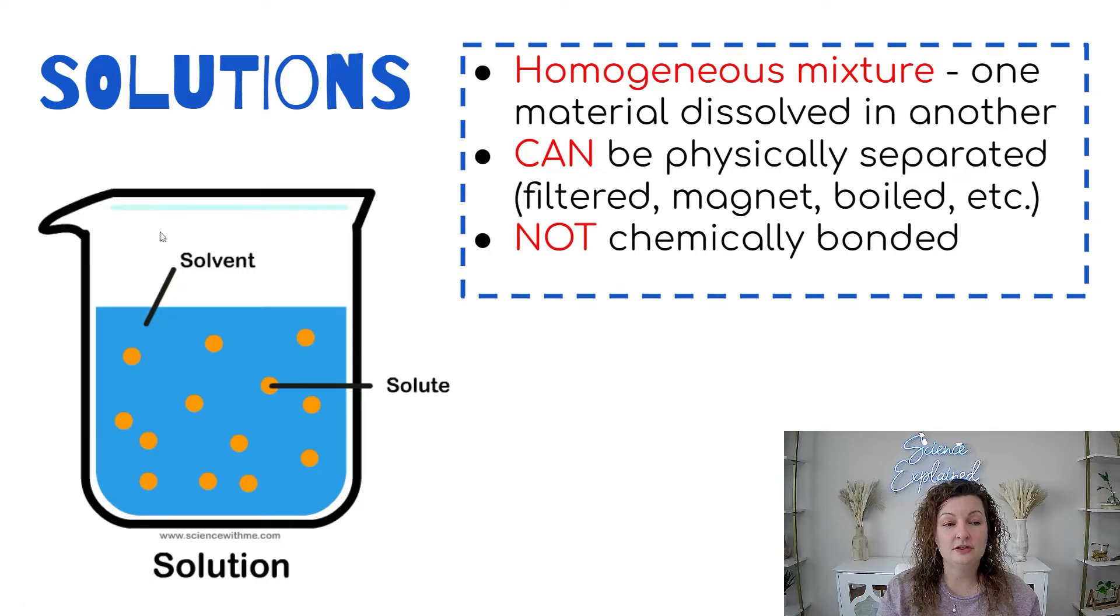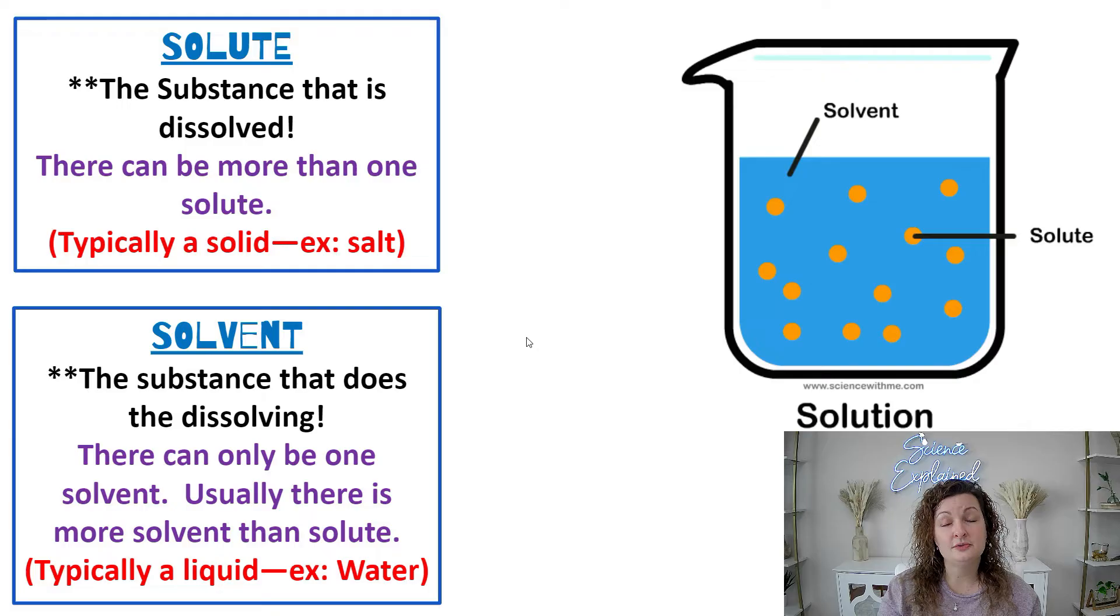Notice we have the solution as a whole, and then we have a solute which is dissolved into a solvent. The solute is what's being dissolved, and the solvent is what it's dissolving into. The universal solvent is actually water. Another way my students have remembered it is the small word goes into the big word. Solute is a smaller word than solvent, so the small word goes into the big word and it's dissolved, making a solution.